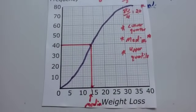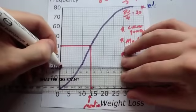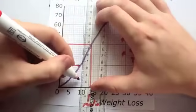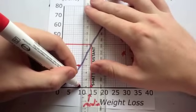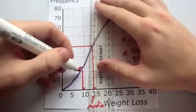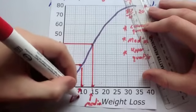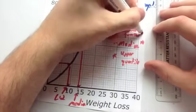So again, you get your ruler. You go across to the line. And you go down. And we've found that the lower quartile is here, which is 9. The lower quartile is 9.